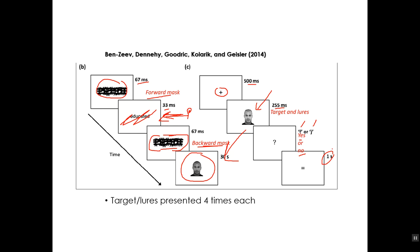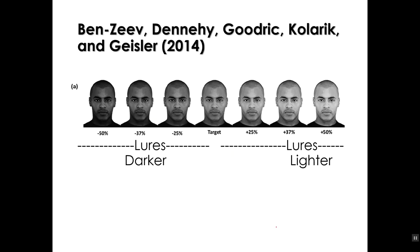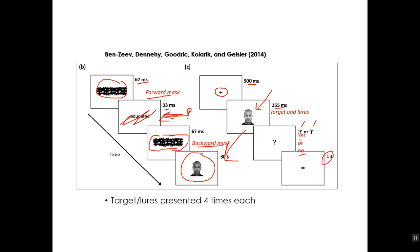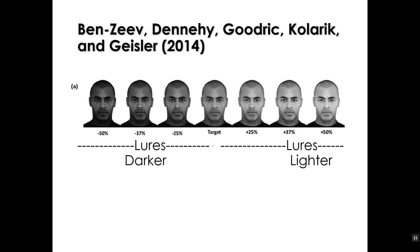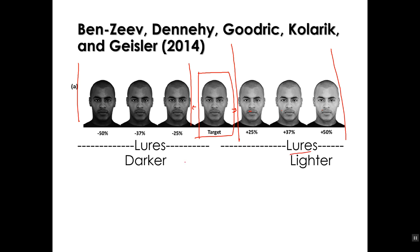So again, very complicated study. You are able to understand this with some work, and you should, because you don't get the payoff without doing the work. What they did is they presented in the comparison position the target, or they took the target's photo and photographically darkened it, or photographically lightened it. And these incorrect faces are known as lures — that is, to lure the subject into making a mistake.